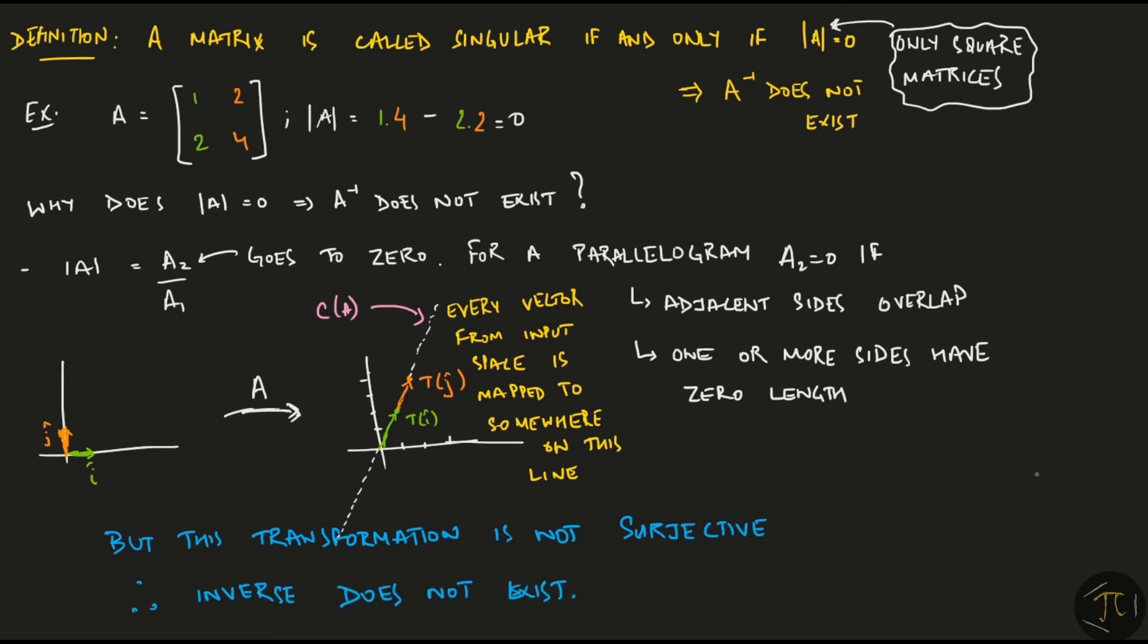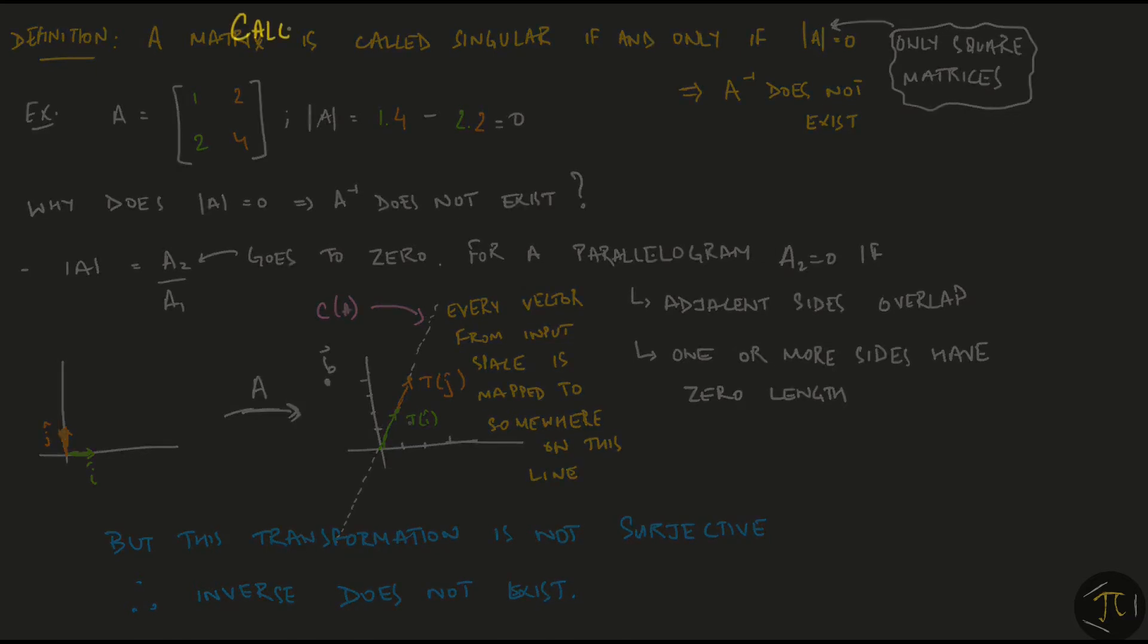Check out the fourth episode of this series to know more about surjectivity. But what it essentially means is that there is some vector in the output space like this B here which is not an image of any vector of the input space.